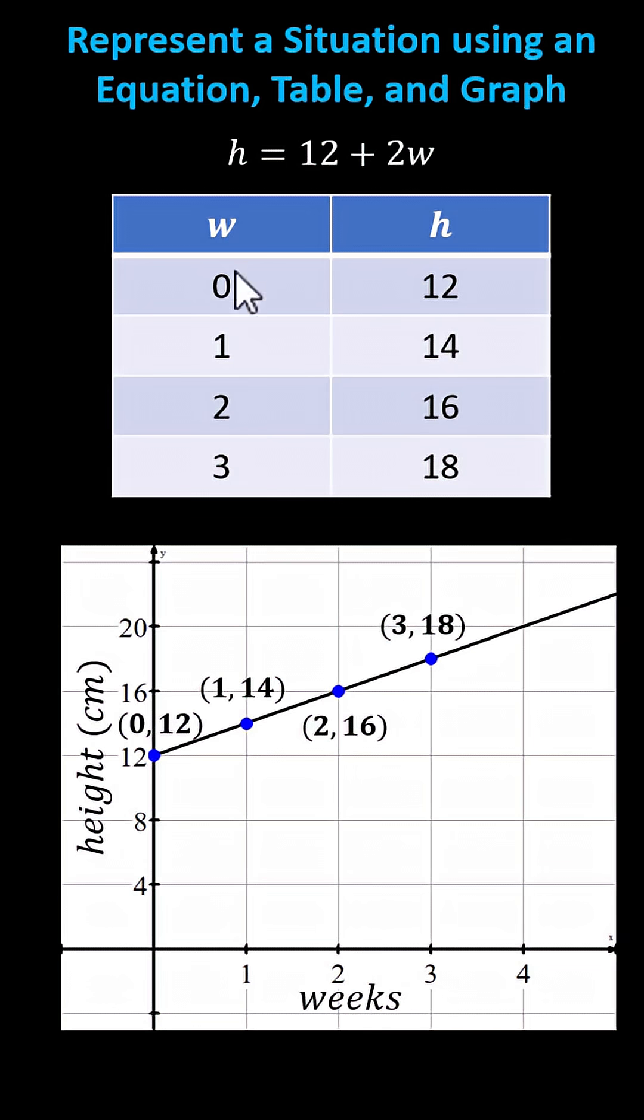So they accommodate the values for w and the values for h. We also want to label the axes. The horizontal axis represents the number of weeks. The vertical axis represents the height in centimeters.